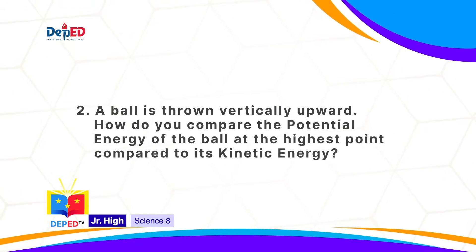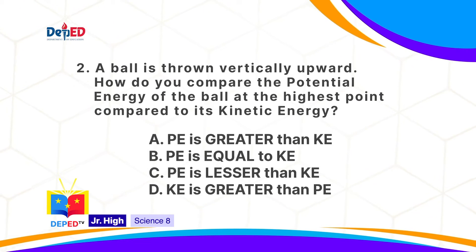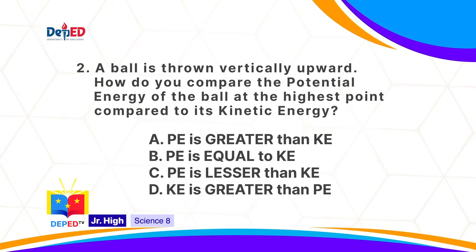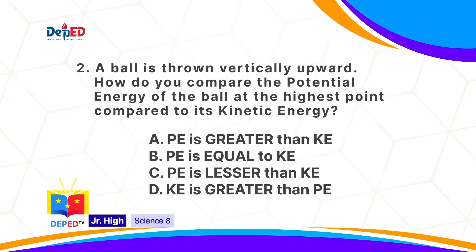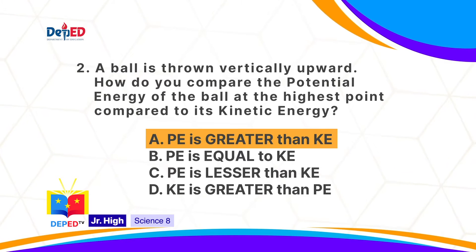A ball is thrown vertically upward. How do you compare the Potential Energy of the ball at the highest point compared to its Kinetic Energy? A, Potential Energy is greater than Kinetic Energy. B, Potential Energy is equal to Kinetic Energy. C, Potential Energy is lesser than Kinetic Energy. D, Kinetic Energy is greater than Potential Energy. The correct answer is A: Potential Energy is greater than Kinetic Energy.